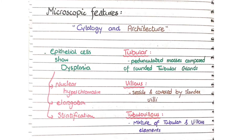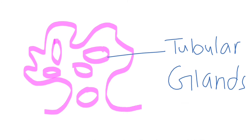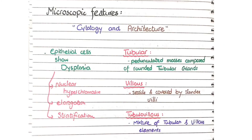Based on architecture, colonic adenomas are classified into tubular, villous, and tubulovillous types. In the tubular type, you see pedunculated masses composed of rounded tubular glands. The villous type consists of sessile masses covered by slender villi — finger-like projections.